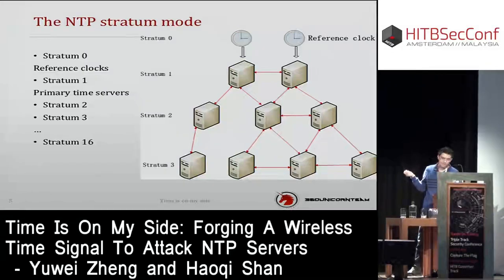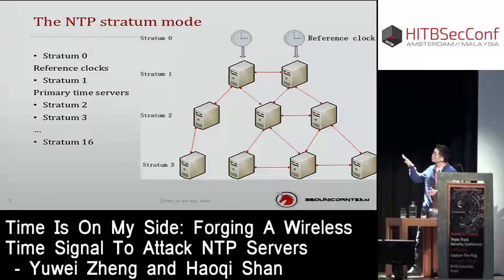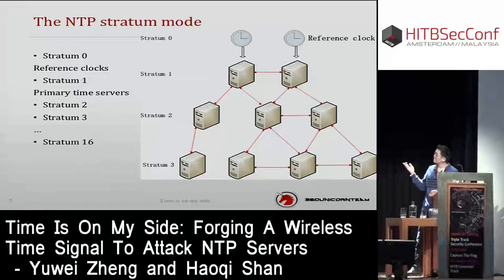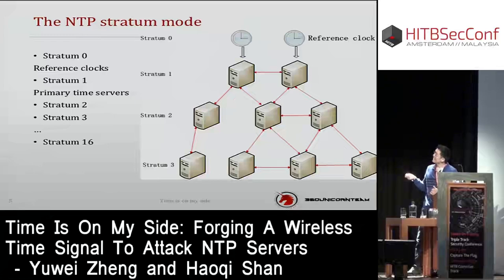A stratum 2 server is connected to a stratum 1 server over a network path, so a stratum 2 server gets its time by sending NTP packet requests to the stratum 1 server. A stratum 3 server gets its time from the stratum 2 server, and so on. The original time source is the reference clock. In this presentation, we will discuss the reference clock and the stratum 1 NTP server.